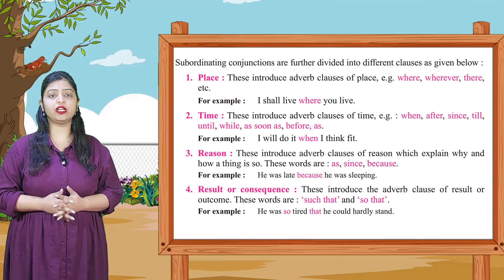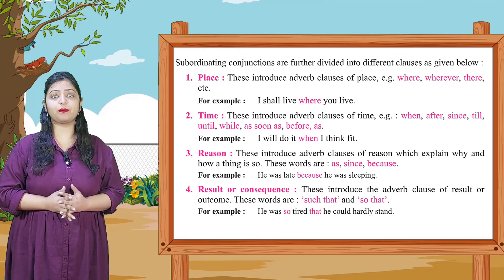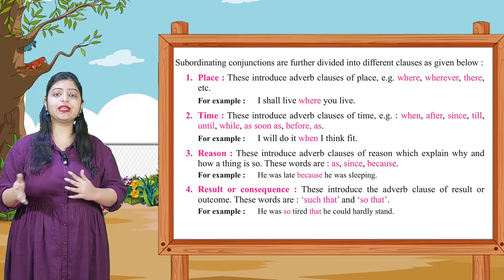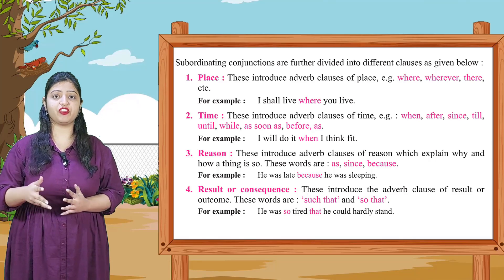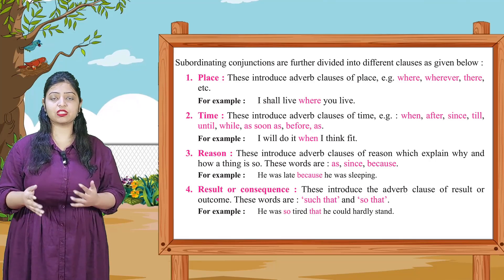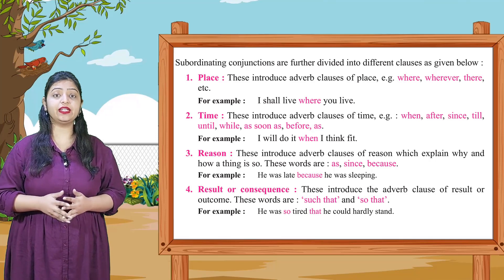So students, subordinating conjunctions which rely on place, meaning we can indicate place using words like where, here, there, in this manner. We just saw an example. Now second, time.